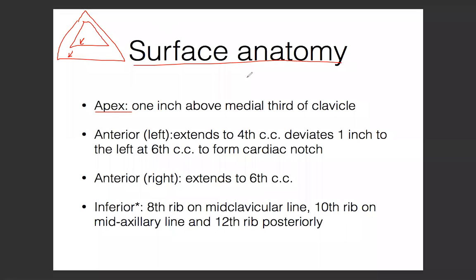The apex of the pleura starts one inch above the medial third of the clavicle - that's not that important. Anteriorly, the left and right are different because in the left, you see the heart. Due to the heart, the left pleura extends to the fourth costal cartilage and then deviates to the left, going down to the sixth to form the cardiac notch. So it goes down, and when it reaches the fourth, it goes to the left, then continues to the sixth - forming the cardiac notch.